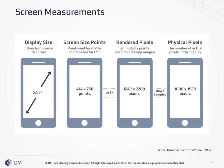Display size is the inches from corner to corner, same as how you measure a TV. Screen size points are the points used for math coordinates and CSS by developers. Render pixels are the multiple points used for creating images by designers, such as 1x, 2x, 3x, or 4x. Physical pixels are the number of actual pixels in the display.